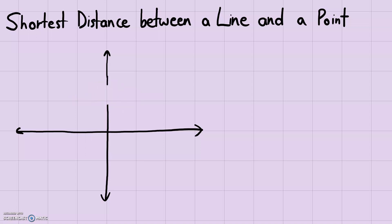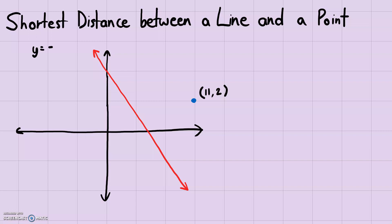The concept is simple. Let's place a point with coordinates (11, 2) and draw a red line. The equation of this red line is y = -2x + 4. We're trying to find the shortest distance between this line and this point.